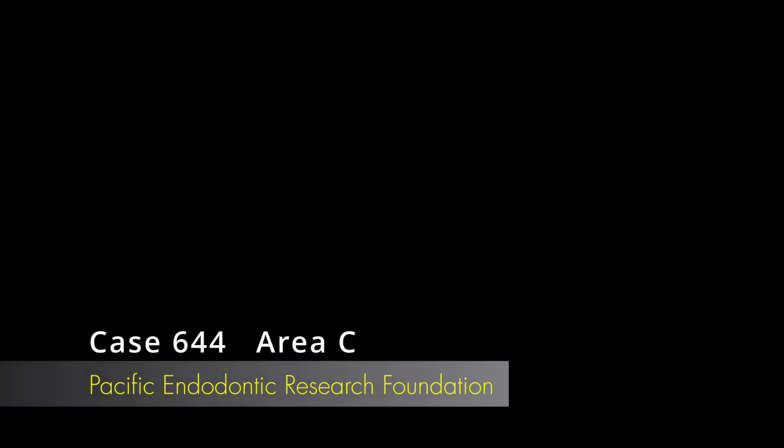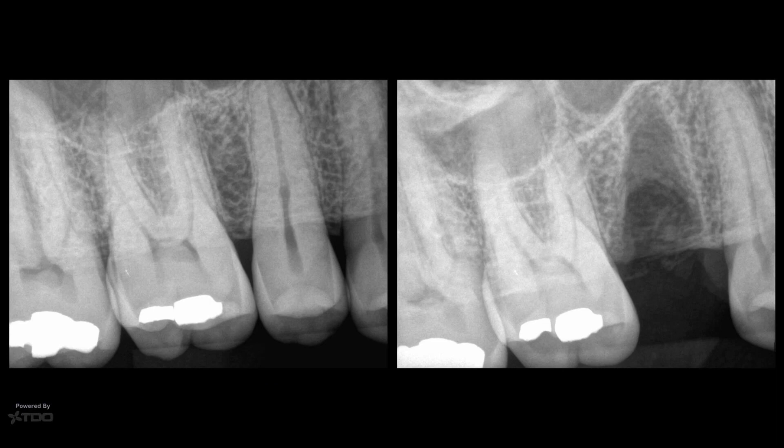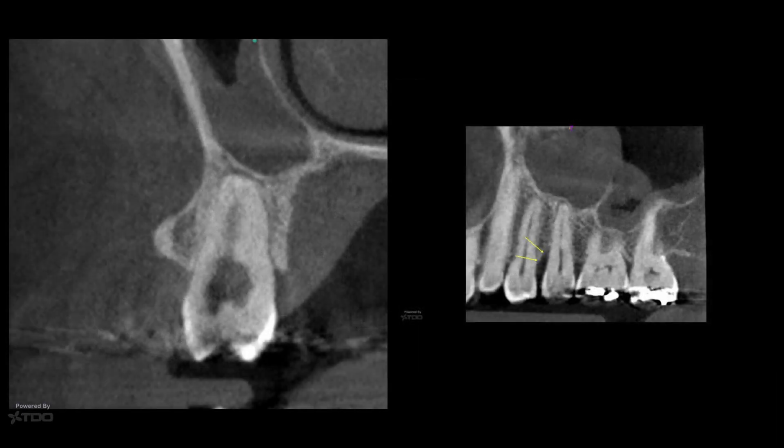This is Rick's case number 644 that I thought we would use as an example to help with your developing better pattern recognition. The case was a maxillary second bicuspid with some sort of absorptive defect present.